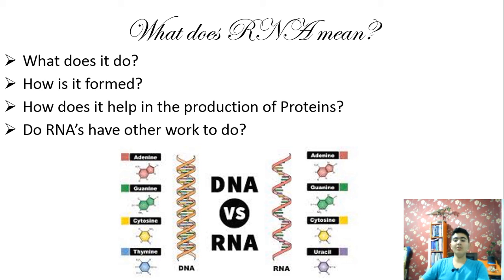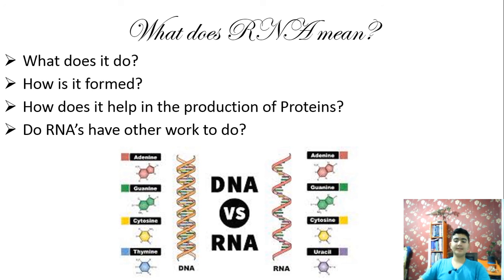Recently, scientists discovered whole new classes of RNA that play other roles in the cell, such as regulating the functioning of protein-coding genes. Some of you might be thinking: do genes specify all the RNAs? The answer is yes, and their production is also referred to as gene expression. In conclusion, by carrying the instructions for making proteins and RNAs and by replicating with each cell division, DNA ensures faithful inheritance of genetic information from generation to generation.